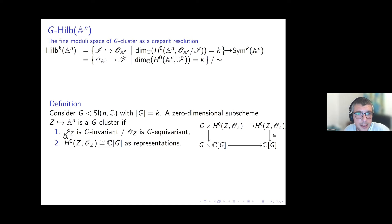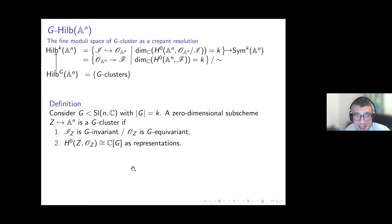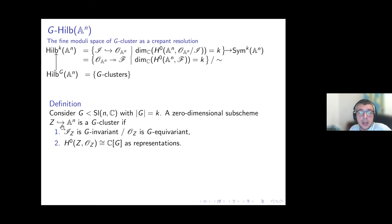One can show that conditions one and two are closed conditions, so the subset of G-clusters is a closed subvariety of the Hilbert scheme. However, this G-Hilbert scheme may be reducible and therefore will not provide a crepant resolution of something which is irreducible.